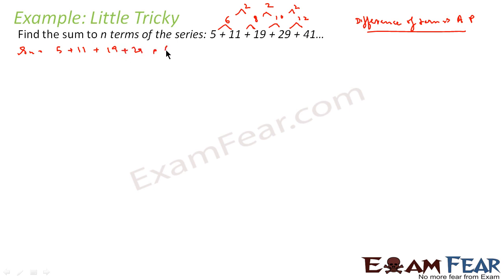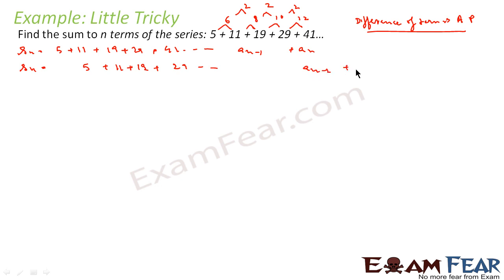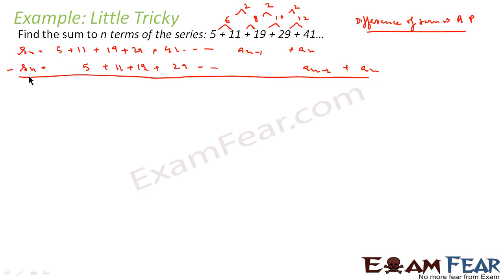In such a case, first we write Sn = 5 + 11 + 19 + 29 + 41 + … + a(n−1) + an. Then we write this series once again shifted by one position: 5 + 11 + 19 + … + a(n−1) + an. We subtract the two, so the Sn terms cancel. This gives: 0 = 5 + (11−5) + (19−11) + … = 5 + 6 + 8 + 10 + 12 + …